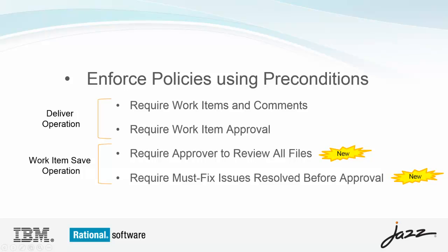Two new preconditions have been added to the work item's save operation specifically for code review. Require approver to review all files ensures that approvers have at least opened the files before approving the work item. Requires must fix issues resolved before approval prevents a reviewer from approving a work item when they have unresolved must fix issues. Reviewers will be able to approve only when all issues they have opened are resolved or the must fix flag has been removed.